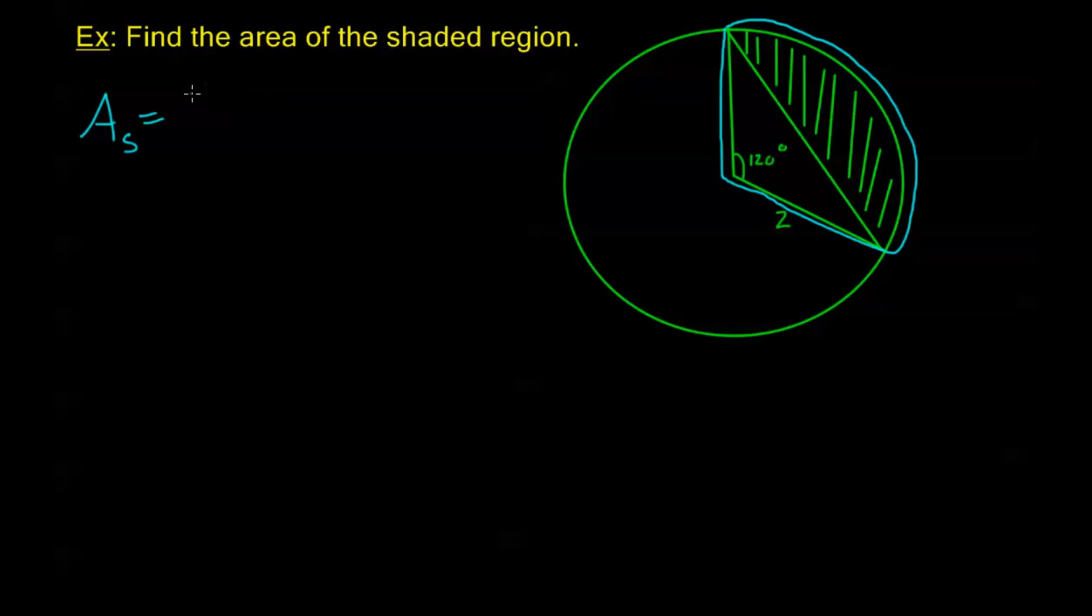And remember, in the last section, we learned that this is going to be 1 half theta r squared. And recall we found that because the whole circle is pi r squared, and we're really looking at theta over 2 pi of the entire circle. So plugging in, 1 half. Now what do I need here? I have theta r squared. Remember, it's very important that for a lot of these formulas, I need my thetas to be in radians. So first, converting to radians on the side, 120 degrees.